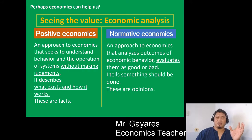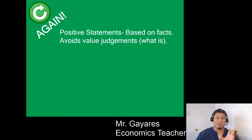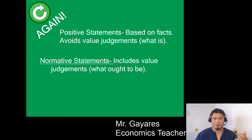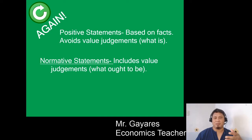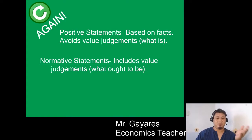So to sum it up: a positive statement is based on facts and avoids value judgment — it just describes what is happening. News, for example, is a positive statement; it just describes events. But sometimes news cannot help but be biased, and normative statements appear — like people shouting 'protect our health workers,' which is a normative statement because it is demanding something. Positive: no judgment, description. Normative: judgment.